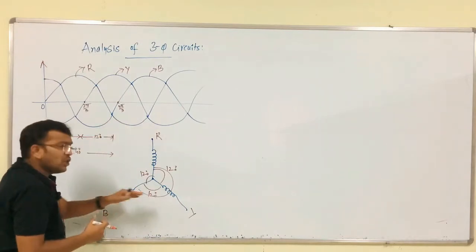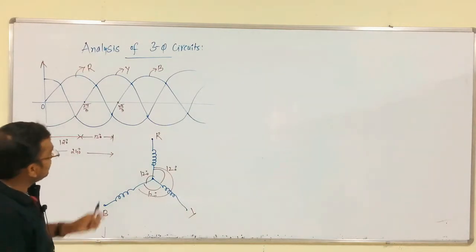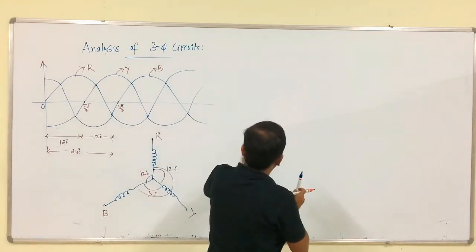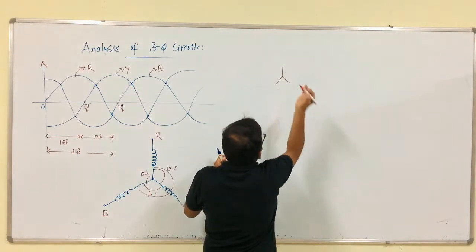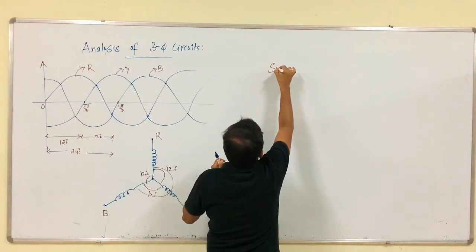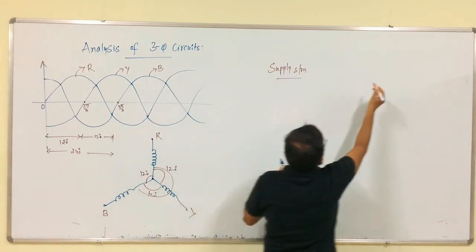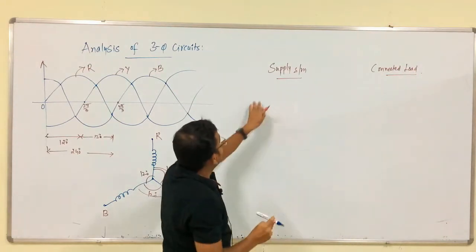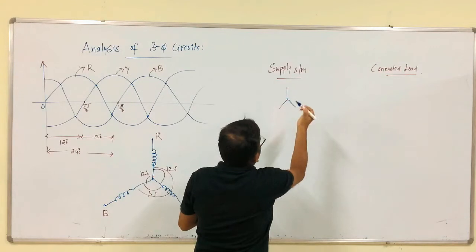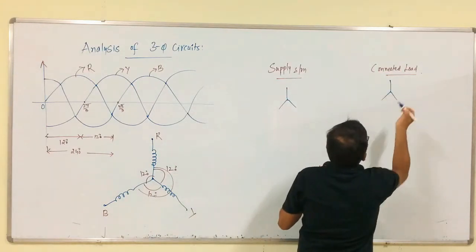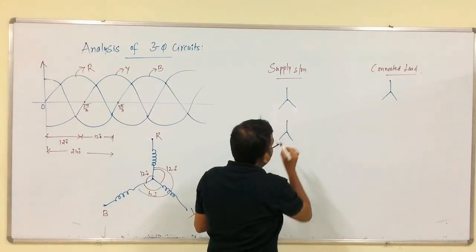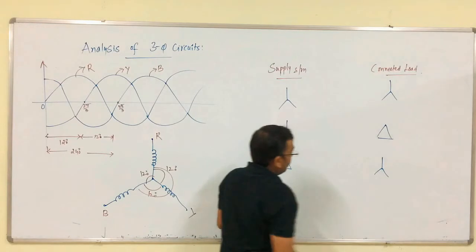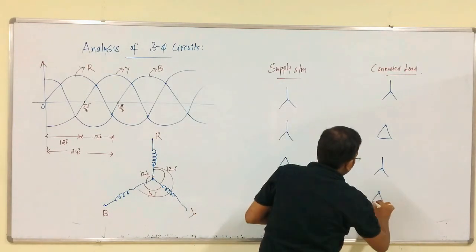Like this we get the voltage waveform from this AC generator. Based upon this analysis, we have a supply system and connected load. Based upon those configurations, we have: star connected supply system and star connected load; star connected supply system and delta connected load; delta connected supply system and star connected load; delta connected supply system and delta connected load.